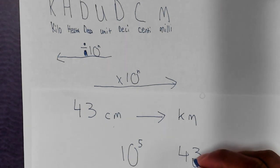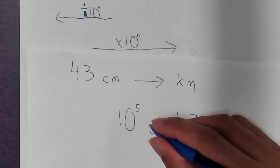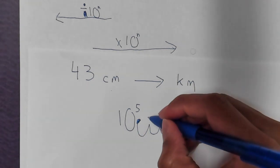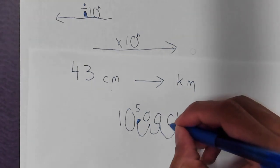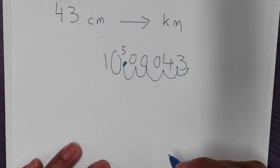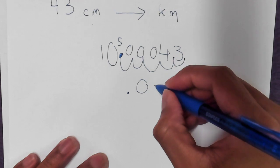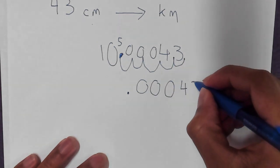So one, two, three, four, five. Decimal place right here. Go in with zeros. One, two, three. So our answer ends up being .00043. One, two, three, four, three.